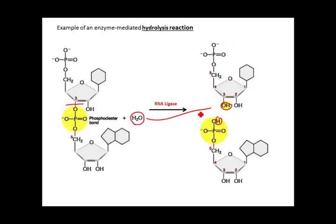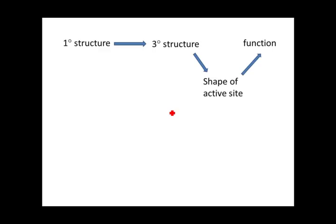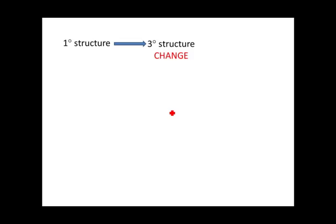Let's get back to the structure of enzymes. Proteins have primary structure leading to tertiary structure — the overall three-dimensional shape — which creates the active site and determines function. The shape of the active site is essential for the enzyme to function properly; it must fit exactly the shape of its substrate. If you change the tertiary structure, you change the active site shape, leading to loss of function. This process is called denaturation.